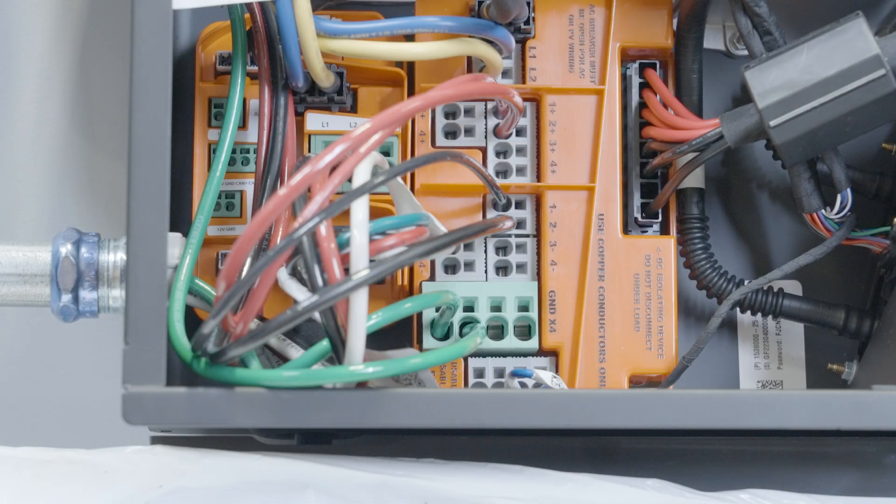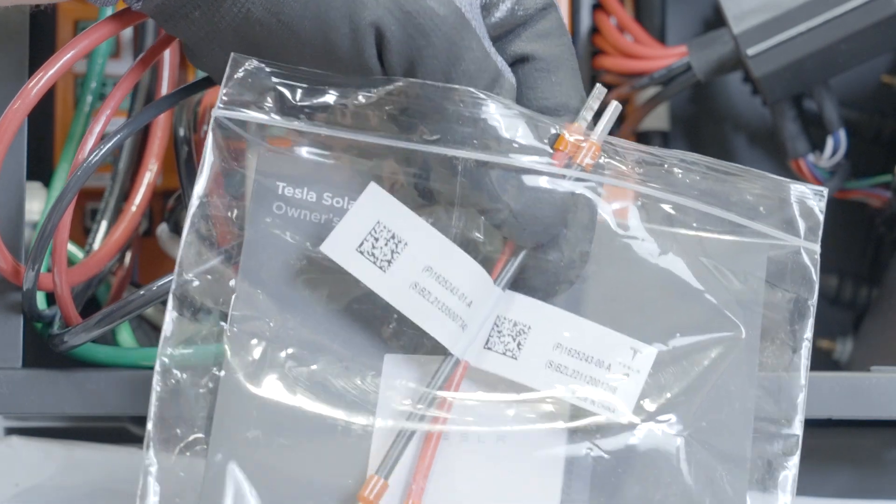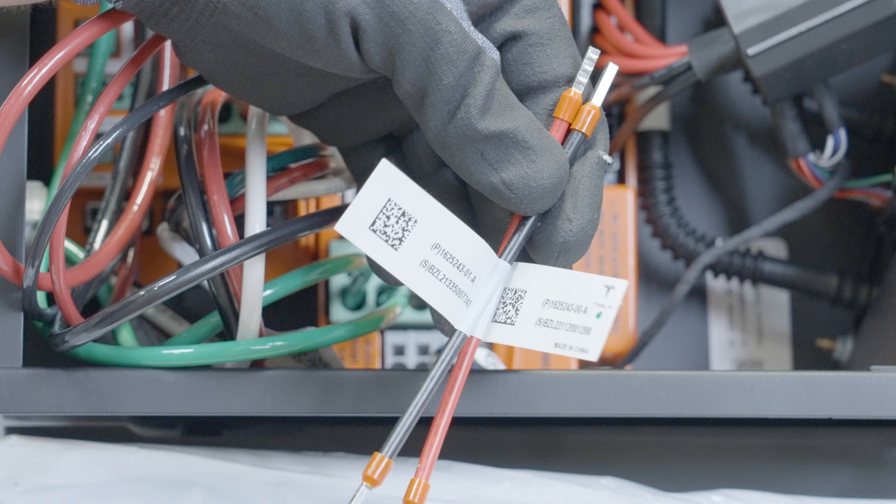If the current for a DC circuit exceeds the 13-amp rating of the terminals, DC conductors are then terminated on the left side, and jumpers are used to join the corresponding sets of terminals for a total allowable current of 26 amps for that circuit.